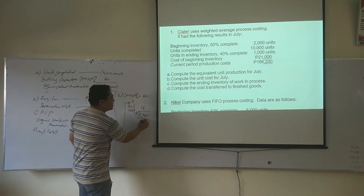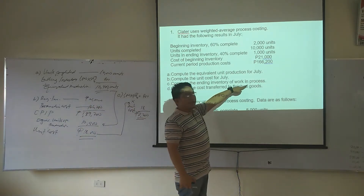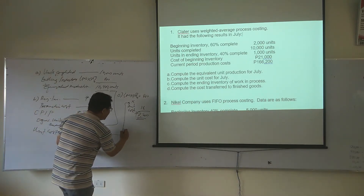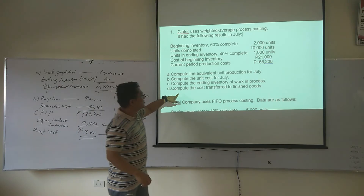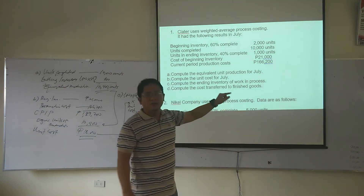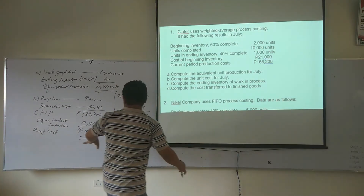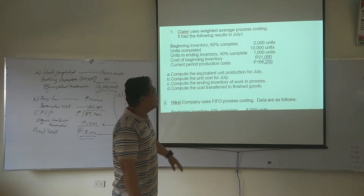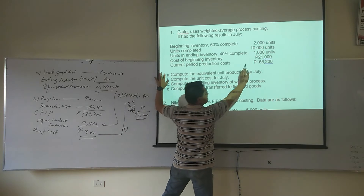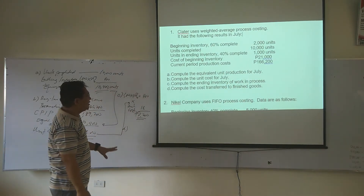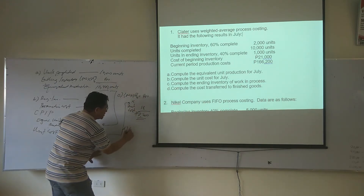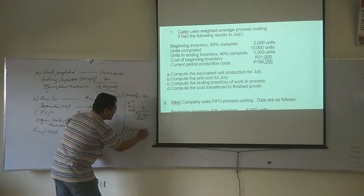That gives us our ending work-in-process cost. So we also compute the cost transferred to finished goods. While 10,400 is the total equivalent units of production, only 10,000 units are completed for the period.